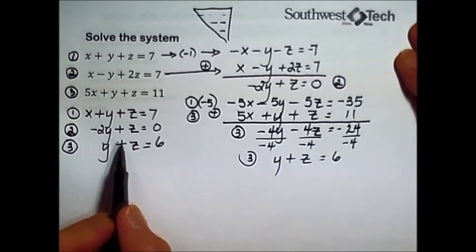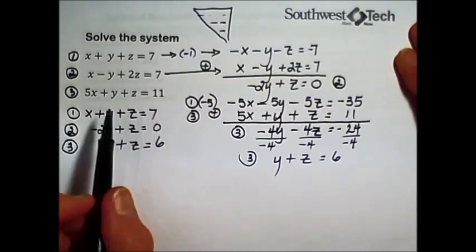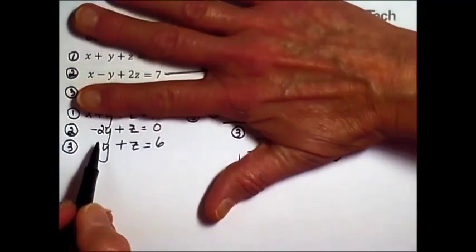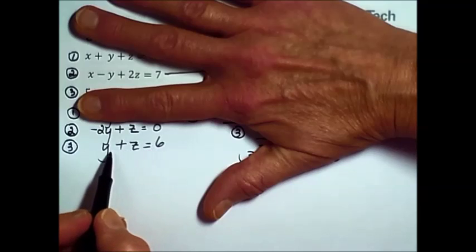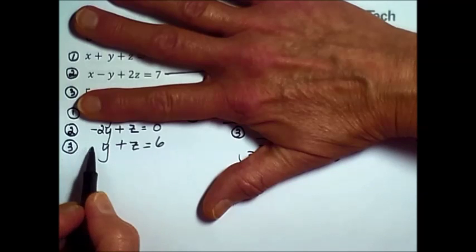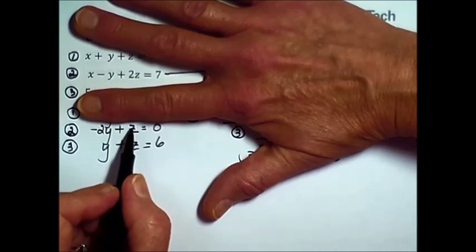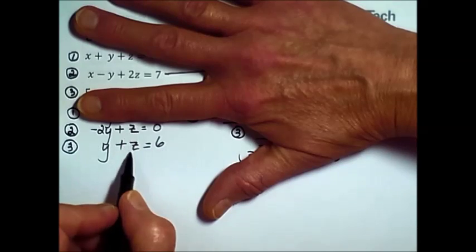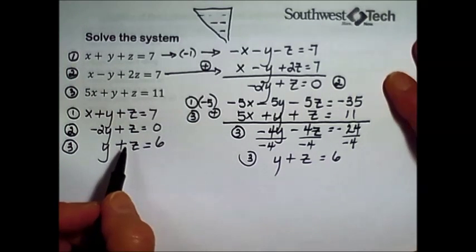We're almost in that desired triangular form. I'm going to leave equation number one alone. I used it to transform the second and the third equation. Now I'm down to two equations and two unknowns. It's your choice how you want to eliminate one of these variables. Probably the easiest would be to multiply the third equation by two so that when added together, the y's will cancel out.